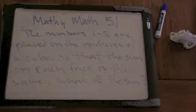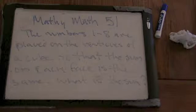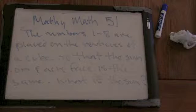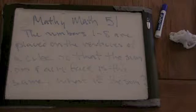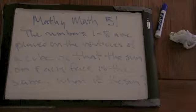So it says the numbers 1 through 8 are placed on the vertices of a cube, so that the sum on each face is the same. And the question is, what is that sum? Okay, you understand the problem? Yeah. Alright, go ahead.